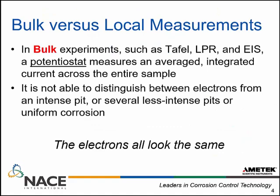With bulk techniques such as Tafel plots, LPR, or EIS, the potentiostat is going to measure an averaged or integrated current across the entire sample. It's not going to be able to distinguish electrons — whether they happen in an intense pit, several less intense pits, or uniform corrosion. Functionally from the potentiostat, all the electrons look the same; I don't know where they came from, only that they are flowing through the reaction.